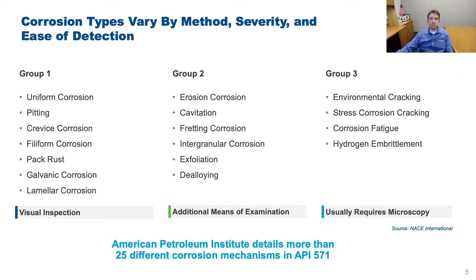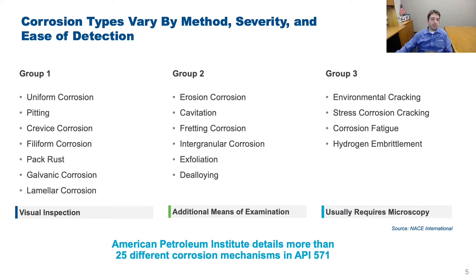The American Petroleum Institute details more than 25 different corrosion mechanisms in API 571, divided into three major categories by severity, method, and ease of detection. Group three is what we'll primarily focus on here — the corrosion methods in this group require a microscope to detect.